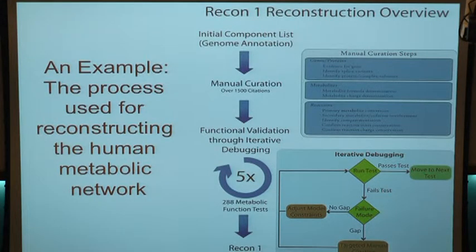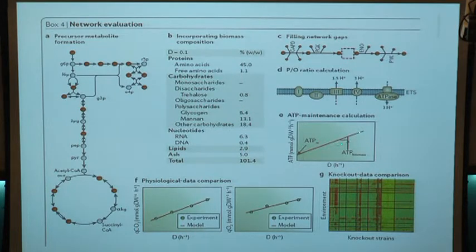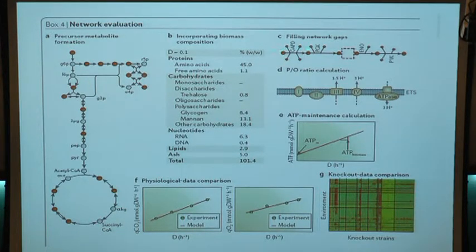Here is an example of the ATP maintenance calculation. You measure the amount of ATP that's necessary as cells are growing. The slope tells you the growth-associated maintenance needs for ATP, and the intercept is the non-growth-associated maintenance — just how much ATP it takes to cycle and stay alive. You fill in network gaps and then start comparing to physiologic data. For instance, here is CO2 usage in the experiment versus the model.